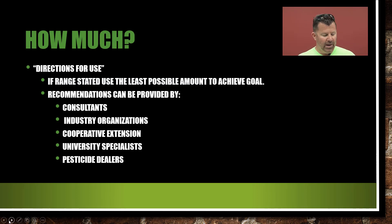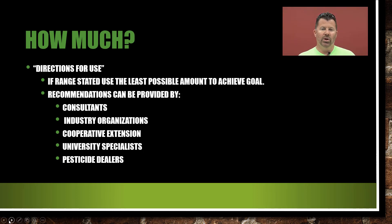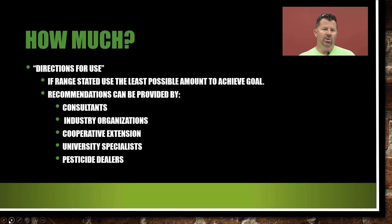How much do I need to apply? We're going to figure this out by first reading the label. You've already seen the lecture entitled Pesticide Labeling. We're going to look for the directions for use on the pesticide label. If it states a range of, let's say, four to five ounces per gallon, we're going to use the lower number — the least possible amount to achieve our desired effects. So we would apply four ounces if it's giving us a range of four to five.